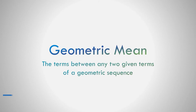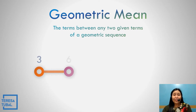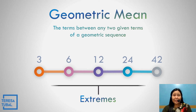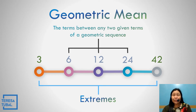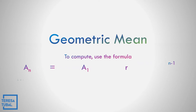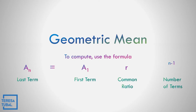What is geometric mean? The geometric mean refers to the terms between any two given terms of a geometric sequence. The formula to be used is the same as the formula for the geometric sequence: a sub n is equal to a sub 1 times r raised to n minus 1. Here, a sub n denotes the last term, a sub 1 is the first term, r is the common ratio, and n is the number of terms.